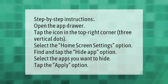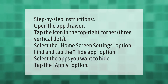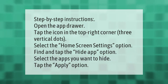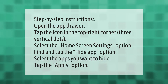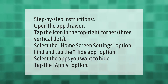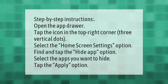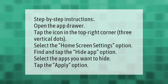Open the app drawer and tap the icon in the top right corner — three vertical dots. Select the Home Screen Settings option, then find and tap the Hide App option. Select the apps you want to hide, then tap the Apply option.